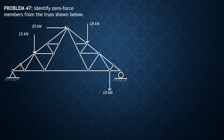First, we consider this joint here. The two members are collinear — this is unique. So automatically, this member carries no force. Then we proceed to the next joint.